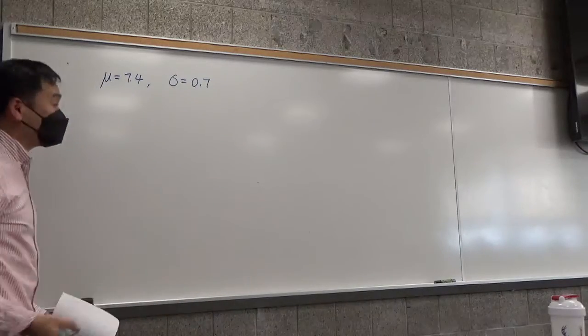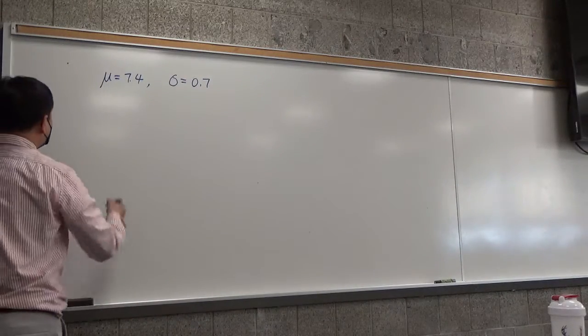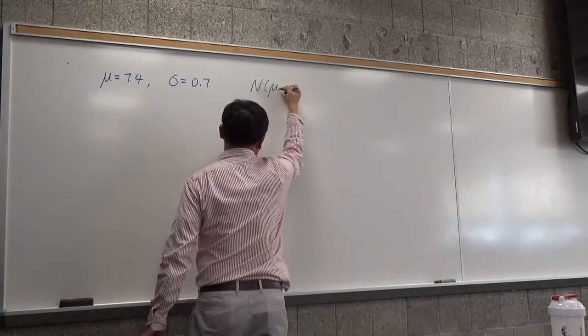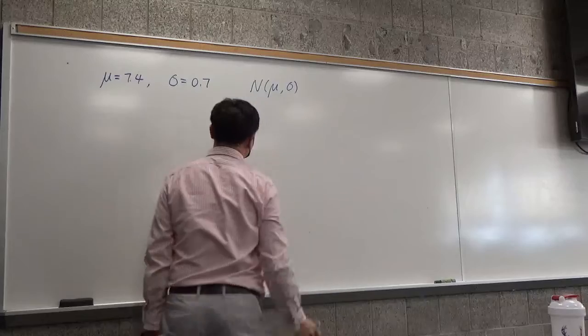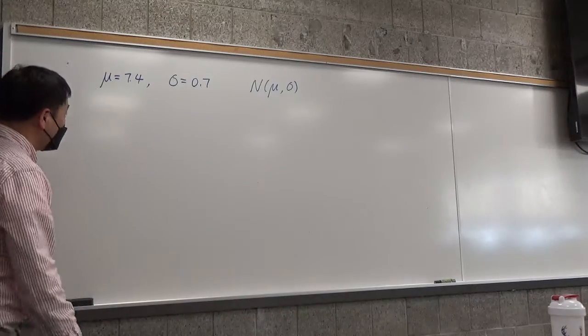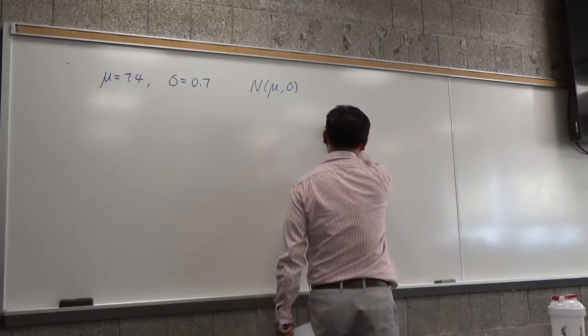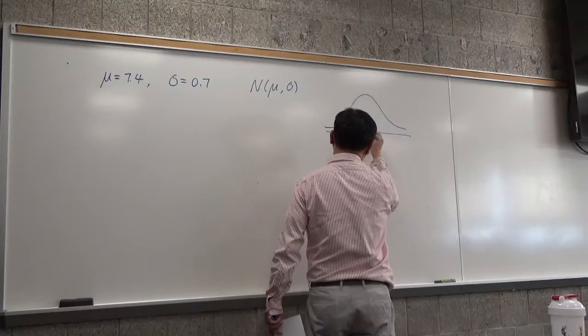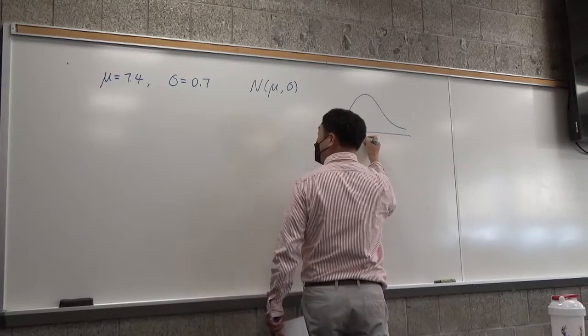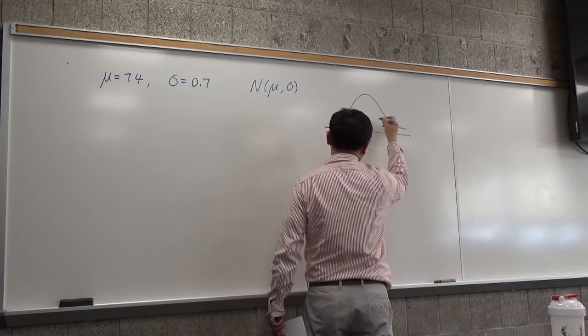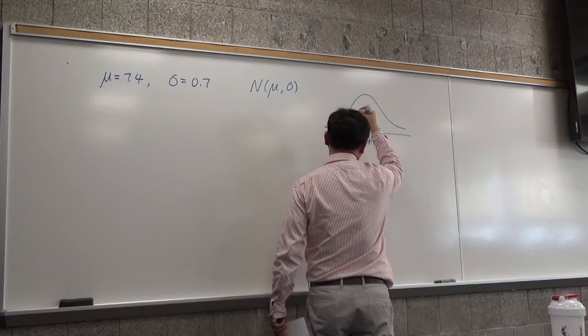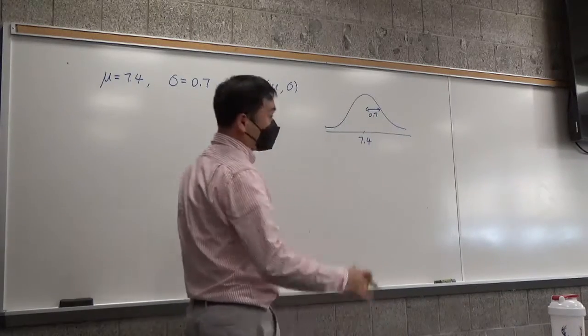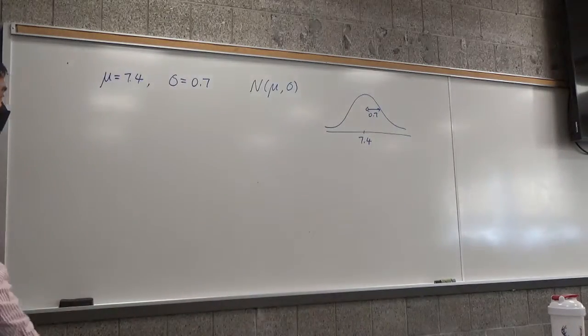So let's say you have a normal distribution with average mu and standard deviation sigma. That means the distribution looks like a bell curve, where the center is at 7.4, and 0.7 is related to the width of this bell curve.